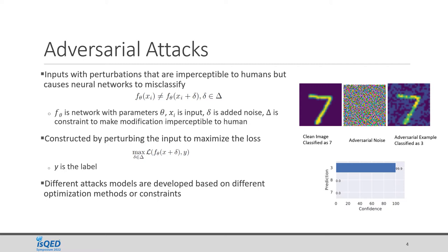Mathematically, these attacks are constructed by solving optimization problems where the aim is to maximize the loss instead of minimizing it, as in regular neural network training. In adversarial attack construction, the network parameters like weights and biases are kept constant, but the input is changed. Depending on the constraint and optimization method used, many different attack methods are proposed — such as Fast Gradient Sign Method, Saliency Map Method, and iterative methods.